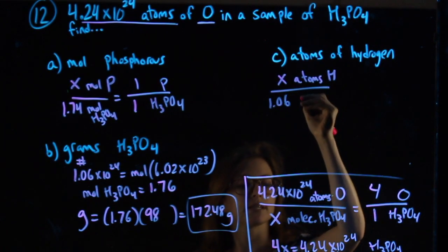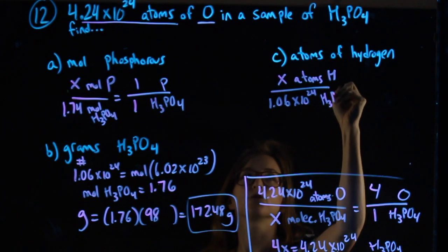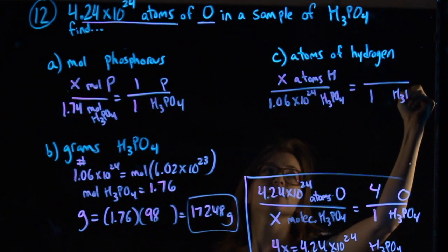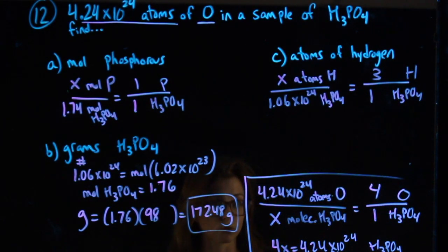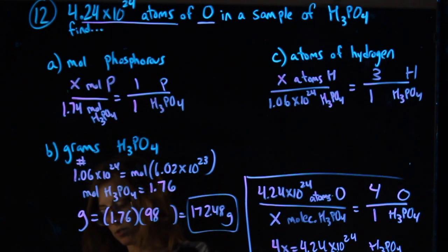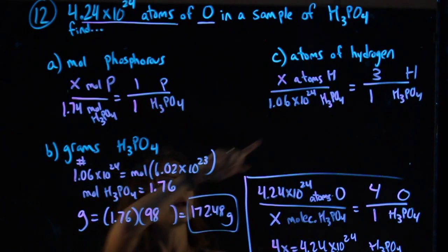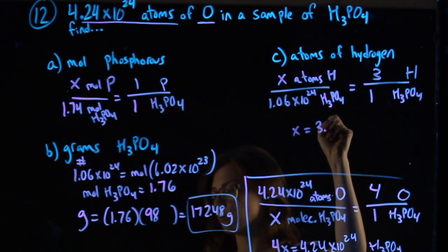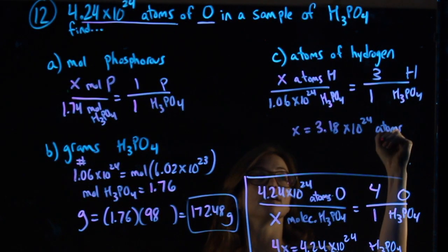I know my 1.06×10²⁴ molecules of H3PO4. And I ask myself, in one molecule of H3PO4, how many H's are there? The answer is three. So I end up taking that number of 1.06×10²⁴. When I cross-multiply, it gets multiplied by three. And we get 3.18×10²⁴ atoms of hydrogen. That's my answer there.